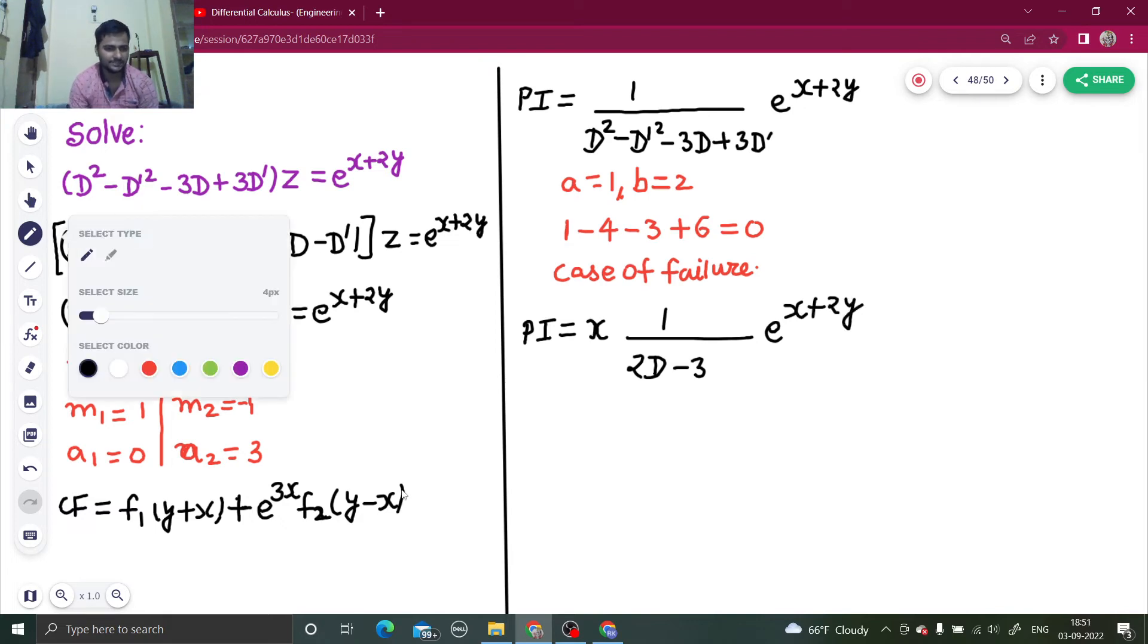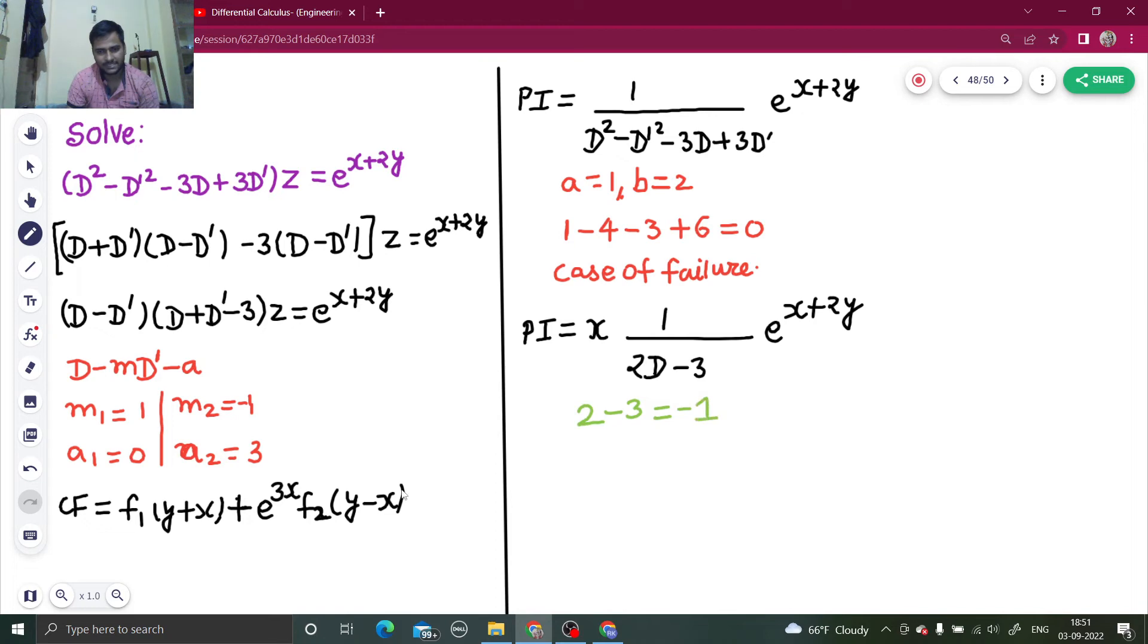Again check. If I put a as 1, so 2 into 1 is 2 minus 3 which is minus 1. This time the denominator is not coming as 0.